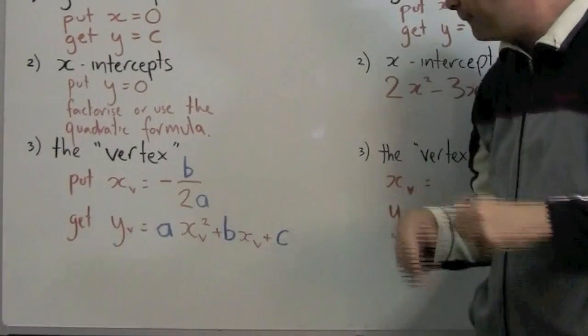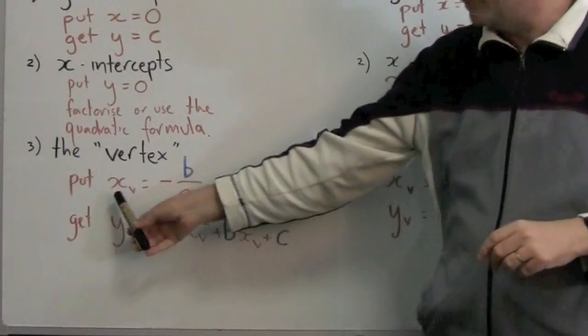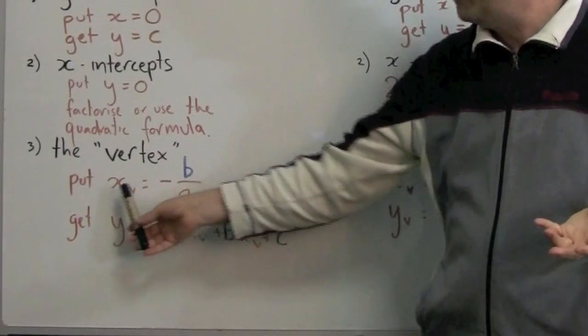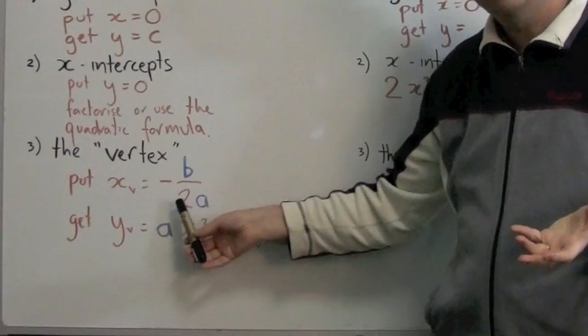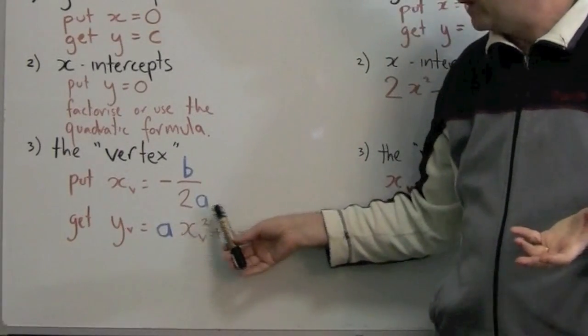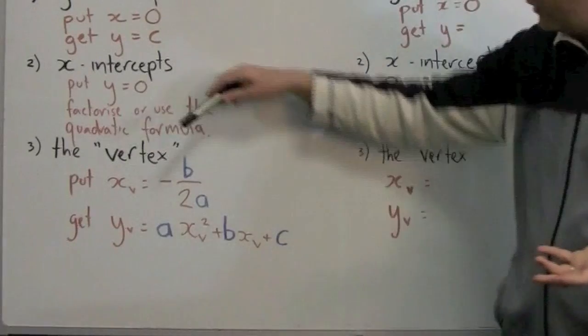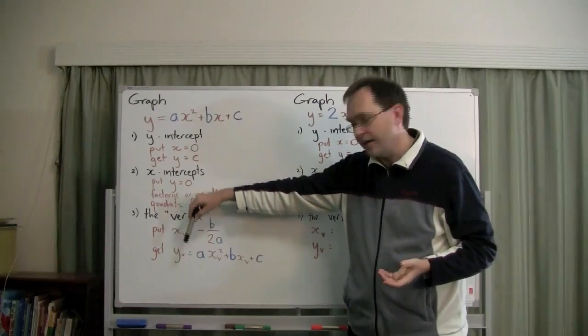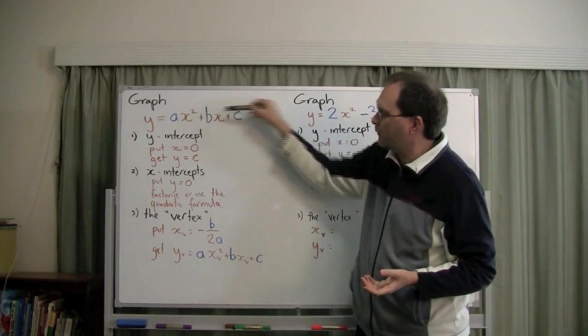To find that, you've got this equation. The x coordinate is minus b over 2 times a. And to find the y coordinate, you take this x value and you substitute it into the original equation.